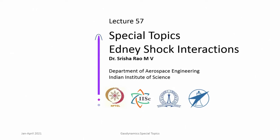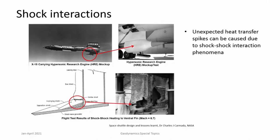If you consider a complex shaped body in hypersonic flow, it will have many features about it. For example, this is the X-51 vehicle carrying an experimental setup for hypersonic research. This vehicle goes at very high Mach numbers. It also has many protrusions including fins carrying some payload, which is mounted using certain pylons. These are the pylons, and this is the experimental vehicle.